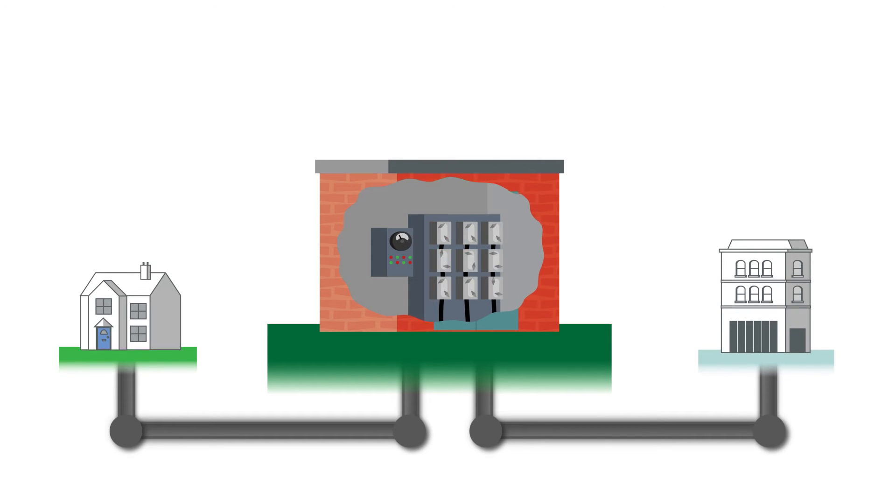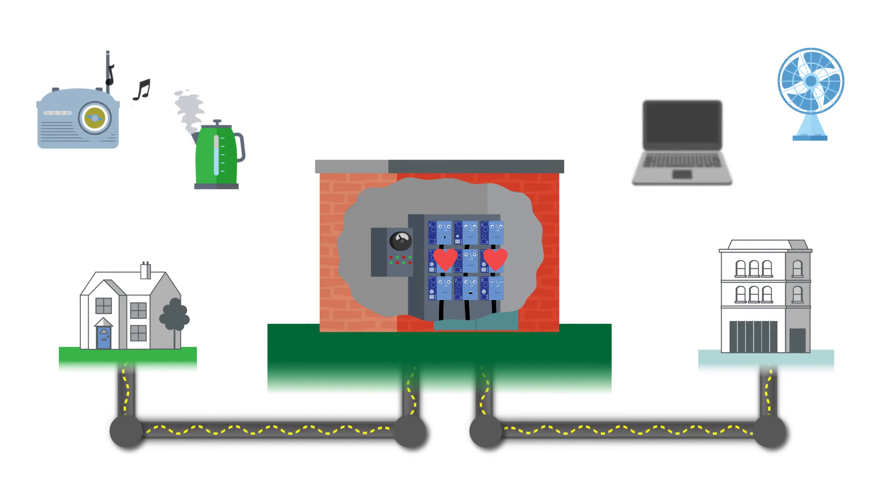So how does it work? Once installed in the substation, Alvin responds automatically to a power outage and conducts a safe-on testing sequence by sending pulses down the cable to determine whether a fault is still present. If no fault is found, Alvin can get the power back on quickly and safely.